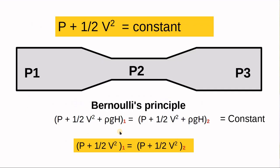Now let's look at the pressure in a pipe. Pressure can be determined using Bernoulli's equation, which states: pressure plus half V-squared times rho plus rho·g·H equals a constant at different locations in the pipe. For the same liquid at the same elevation, density does not change, so we can simplify to: pressure plus half V-squared equals a constant.